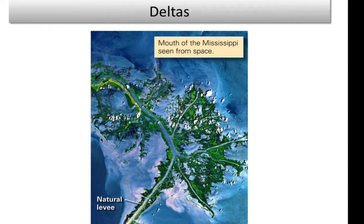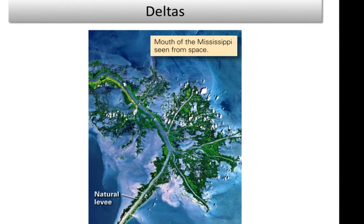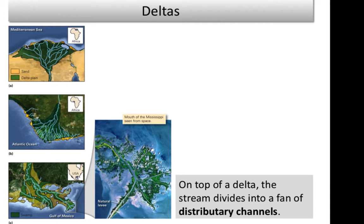We see all this sediment around the Mississippi. The Nile Delta is a classic wave-dominated delta, and the Niger River here is another classical wave-dominated delta.